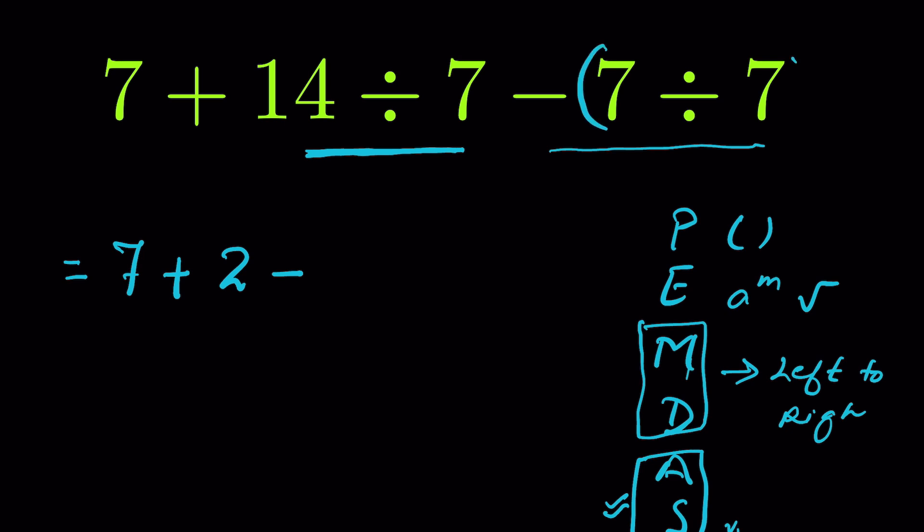is separated by a minus sign, so we can deal with these two divisions in the same step or in a different step, and there won't be any difference. We can write it as is, not doing it in this step, or we can do it in the same step and write 7 divided by 7 as 1.